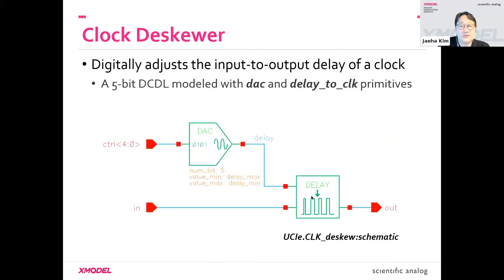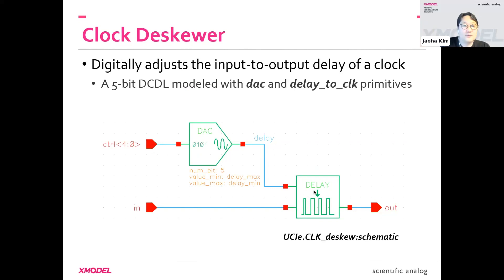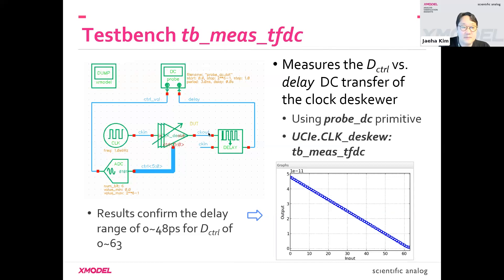Here's the model for the de-skewer. We use a delay-to-clock primitive to adjust the delay between the input and output clock. That delay is controlled digitally using a DAC primitive, which takes the digital code and produces the analog delay value. This is a simple test bench measuring the DC transfer function between the input code and the delay of the buffer.